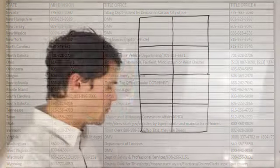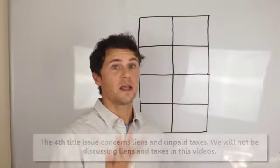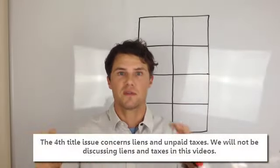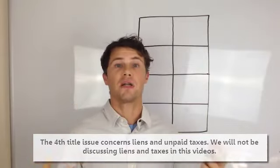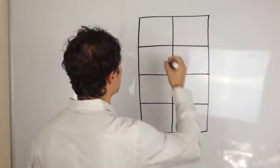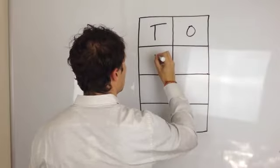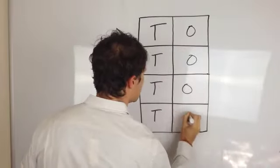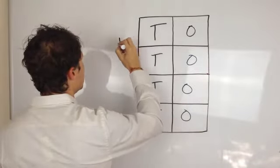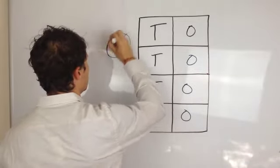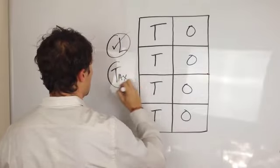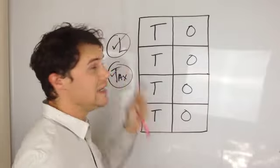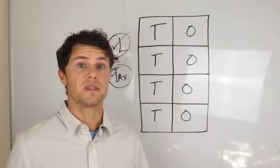Now the graph that you can see behind me — there are typically three major problems that you're going to encounter with title issues. I'm going to write a T and an O in all of these boxes, and also an L with a check mark for liens, and taxes with a check mark. If taxes are not current and there are liens on the property, those could be issues in and of themselves.